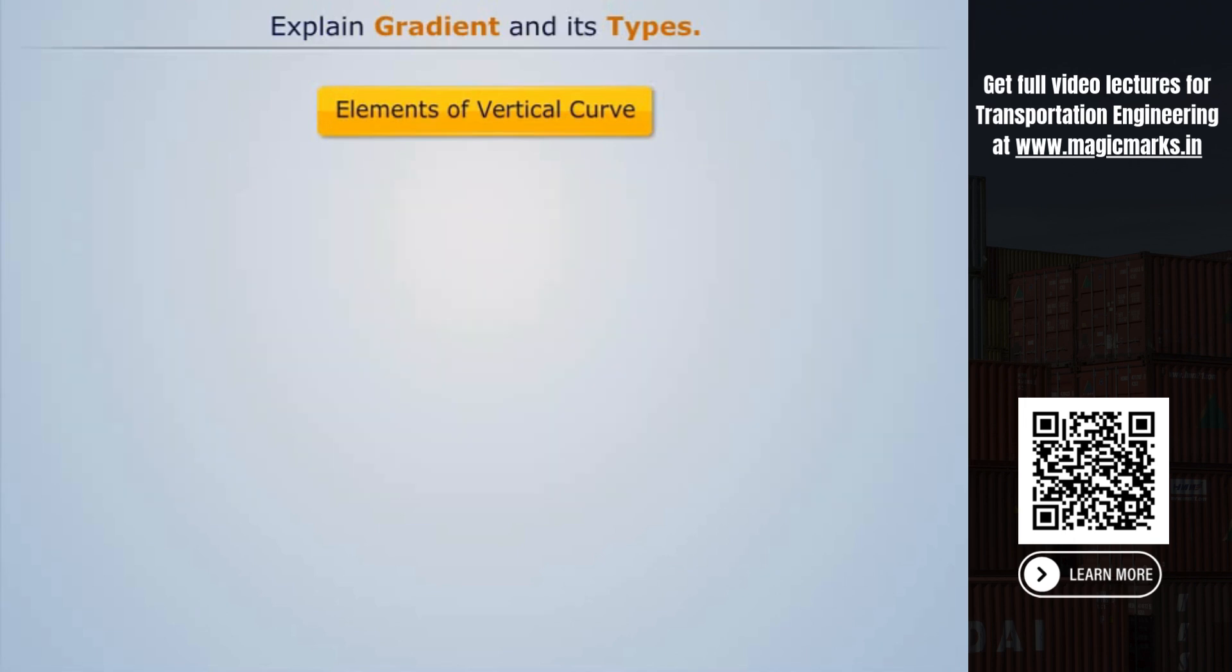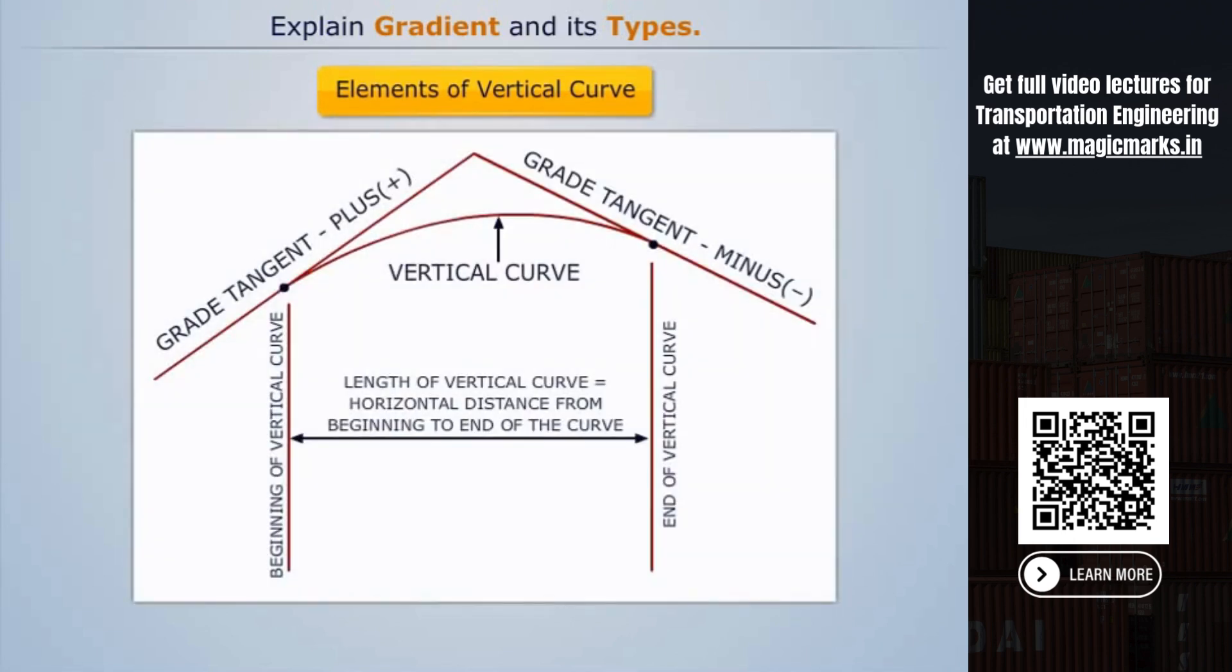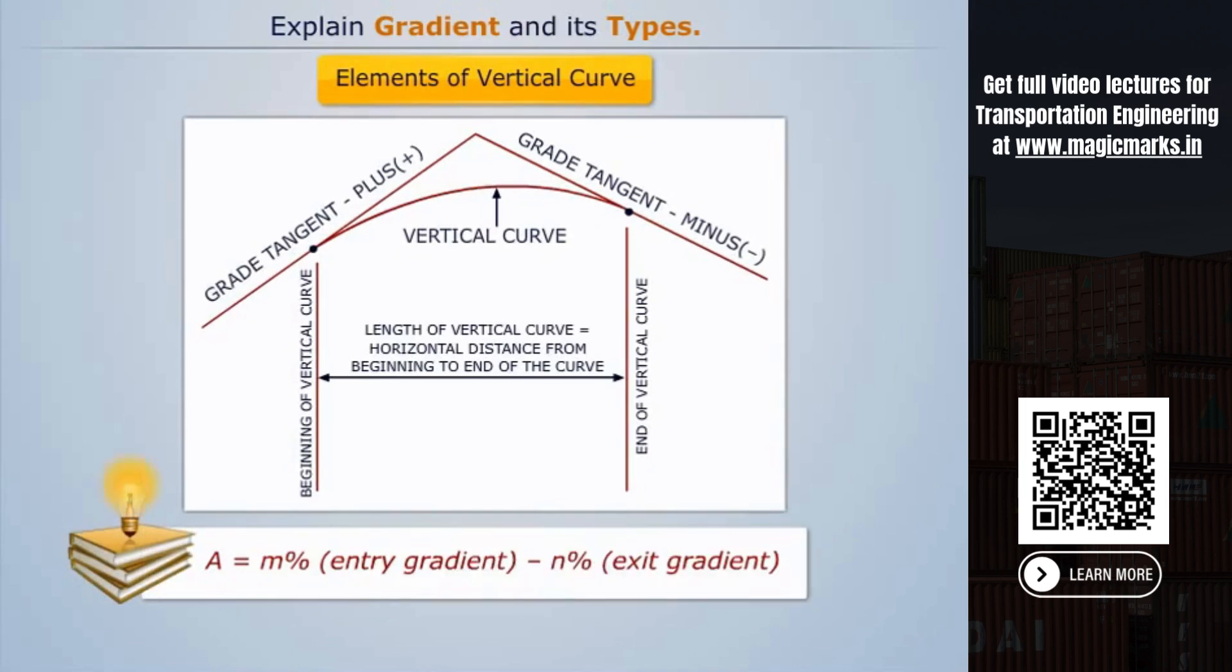In design calculations, the algebraic difference between gradients is used, which equals the difference between entry gradient and exit gradient. The gradient rising in the direction of movement is considered to be positive, and the falling gradient is considered to be negative.